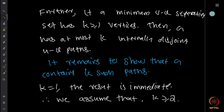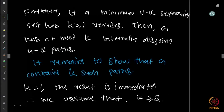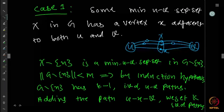If k equals 1, the result is immediate: there is a cut vertex between u and v, meaning u and v can be separated by a single vertex. Every path must go through that cut vertex, so you cannot have more than one disjoint path. But since u and v are connected, there is at least one path. So we get exactly one path, which is the maximum. Therefore k equals 1 is immediate, and without loss of generality we assume k is at least 2 for the remaining proof.